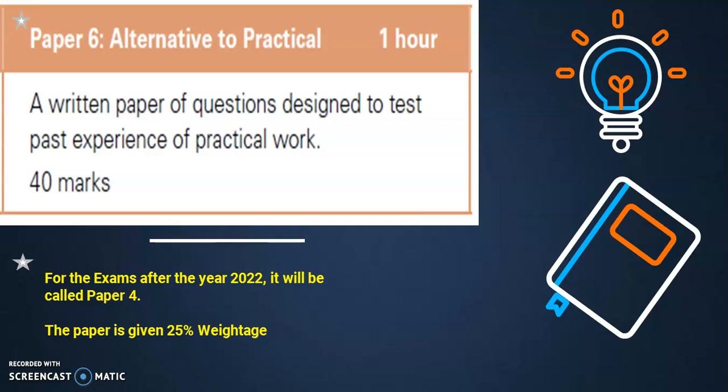This Paper 6, Alternative to Practical, comprises 40 marks. There may be two or three questions. It's a written paper of questions designed to test past experience of practical work. Remember that in this paper you are going to deal with the data of experiments that have already been collected. The experiments are most of the time already being performed.